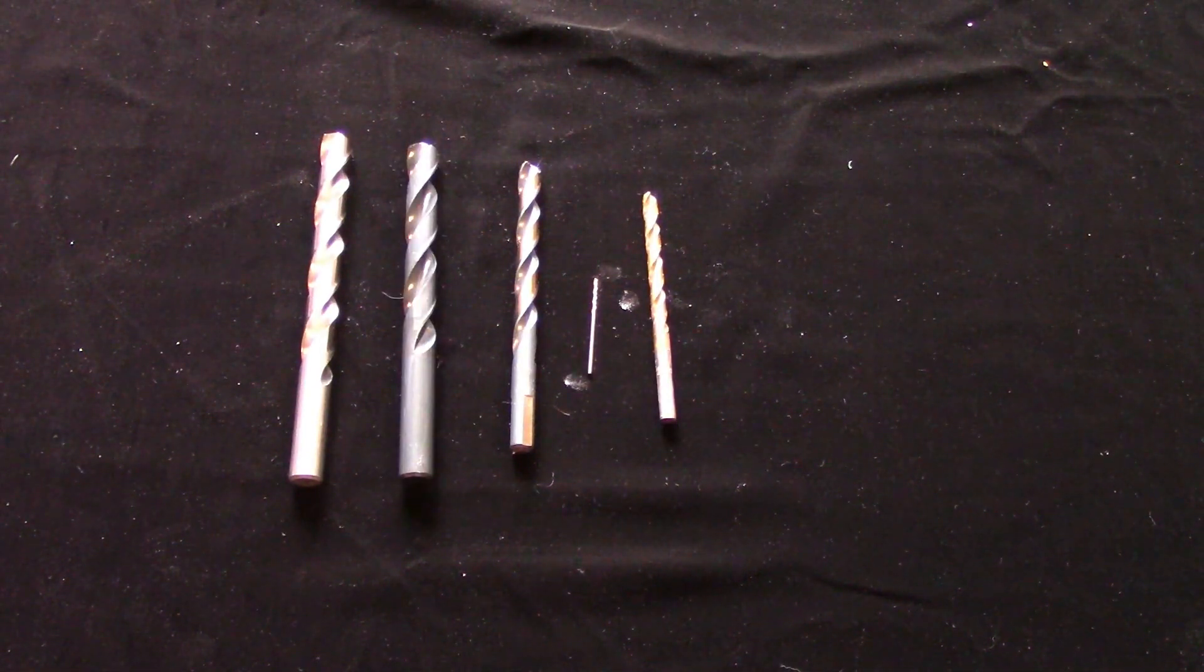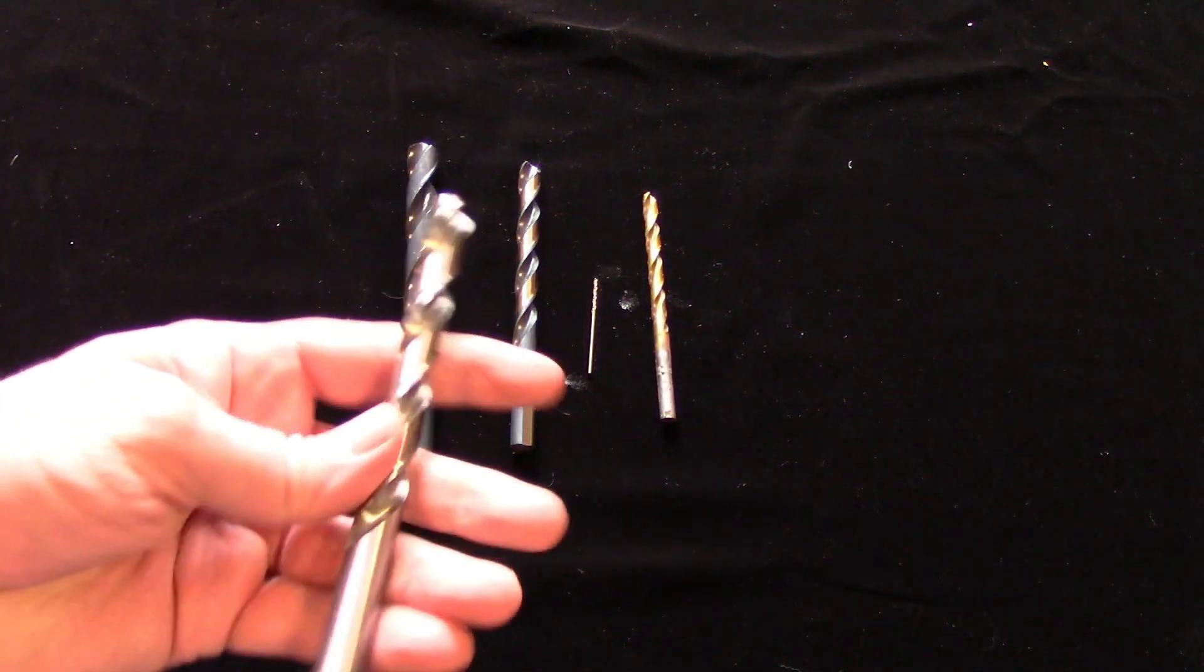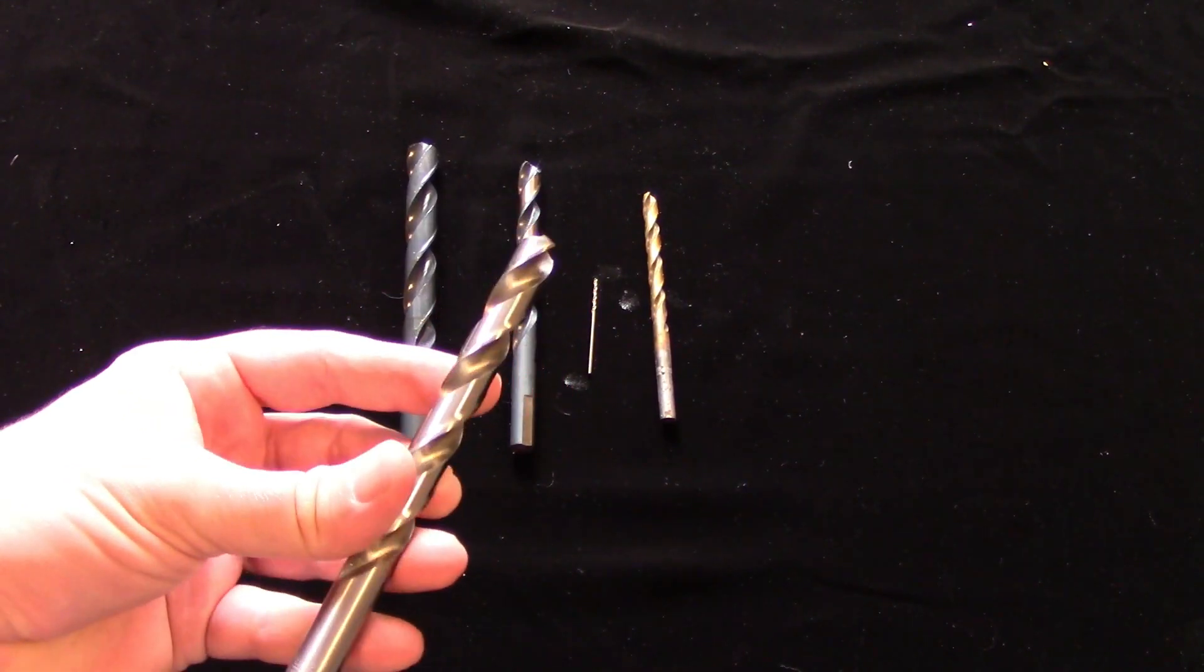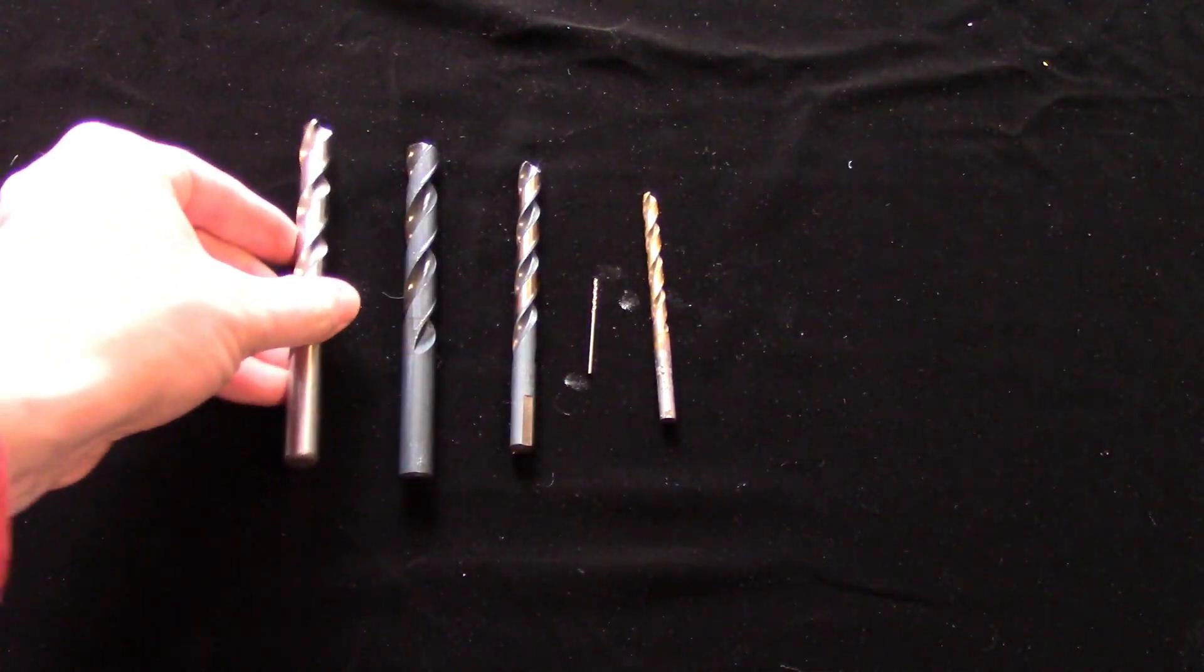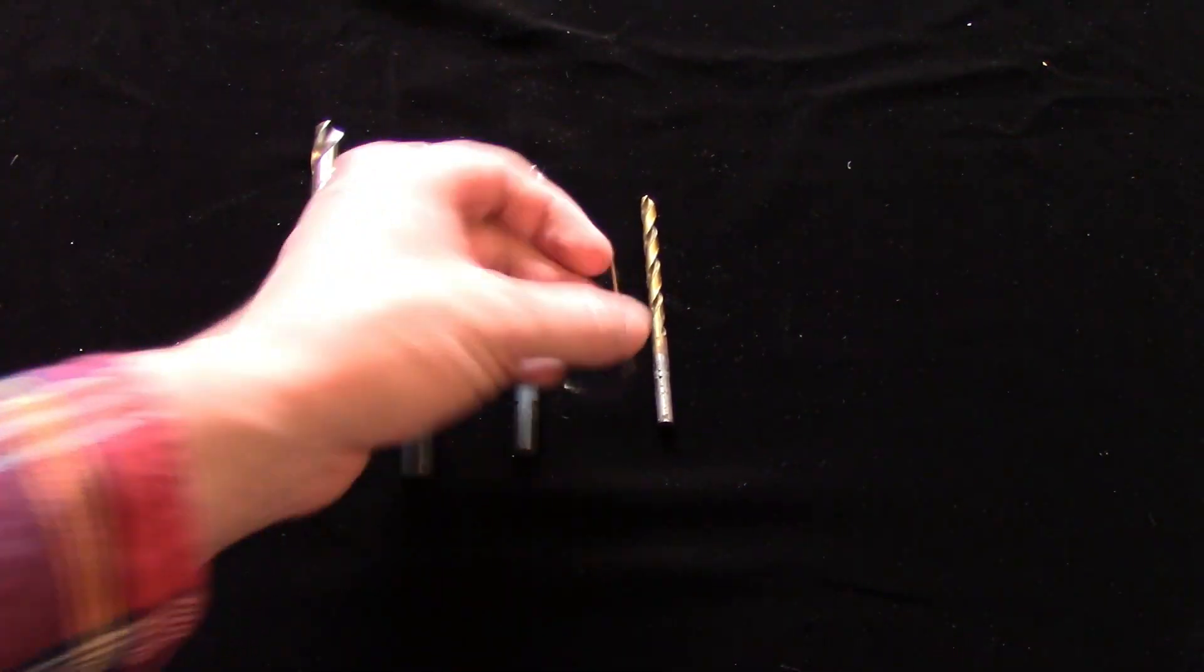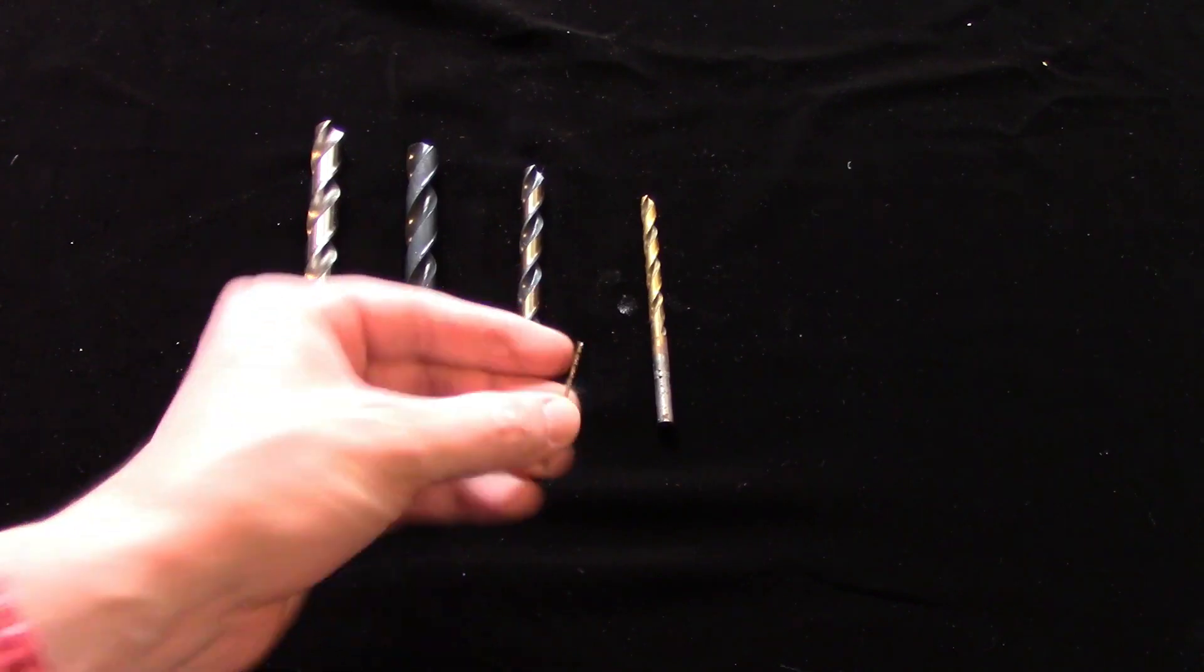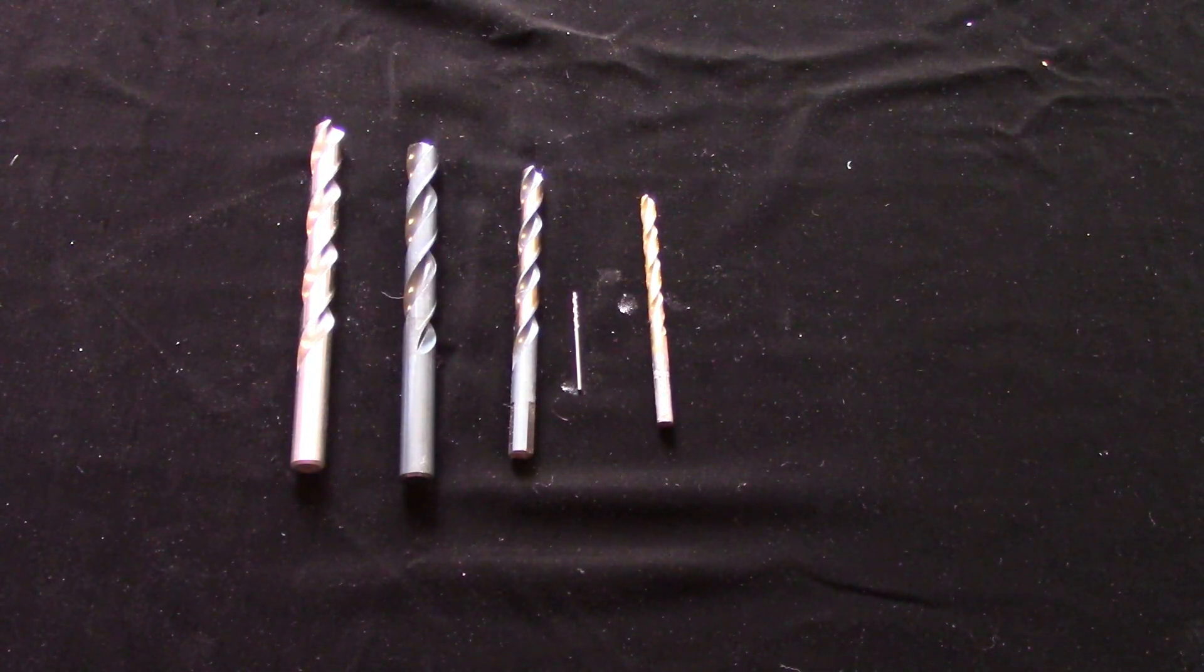Drills are available in many different finishes and coatings that have an effect on cutting speed, tool life, and oil retention. Drills with a bright finish are just uncoated high-speed steel or carbide and are good for general purpose machining. Oxide coatings like black oxide or bronze oxide are available on high-speed steel and cobalt drills for added oil retention.